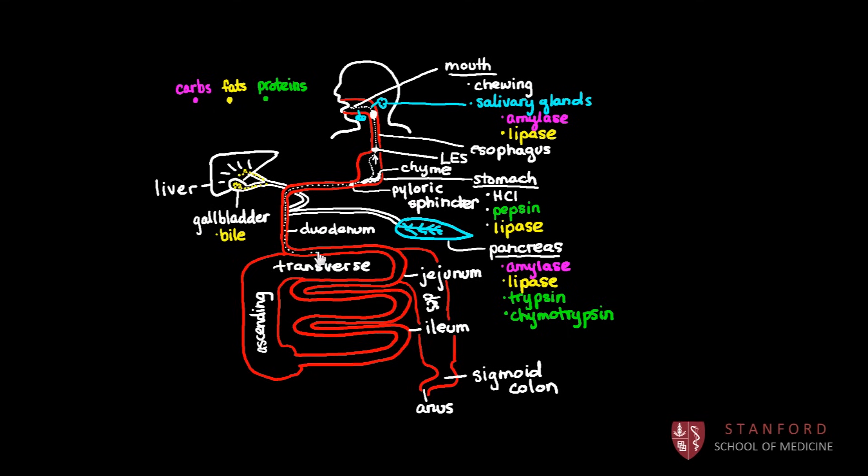So while this food is digesting into its smaller absorbable parts, it's also being absorbed as it passes through this long tube. And you can see how much time there is here to absorb all of the nutrients, because we don't want food to pass through here without enough time for those important nutrients to be absorbed.